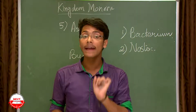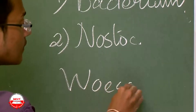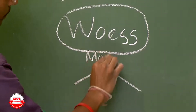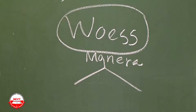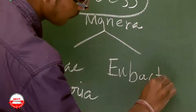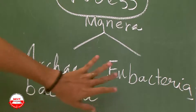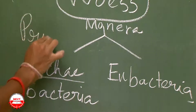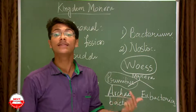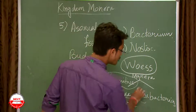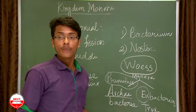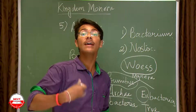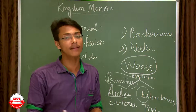Scientist Woese divided Kingdom Monera into two groups: Archaebacteria and Eubacteria. 'Arche' means primitive — as in archaeology, the study of primitive structures — so Archaebacteria are the old, primitive ones. 'Eu' means true, so Eubacteria are the true, advanced bacteria. With this we end Monerans and move on to the next kingdom, Protista.